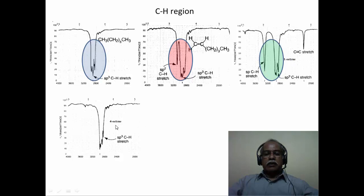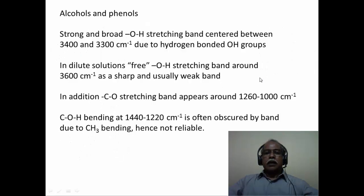If you take an internal alkyne that does not possess a terminal acetylenic CH, this particular band is missing because this is an internal acetylene. Internal acetylenes do not have acetylenic hydrogen. Therefore, that band is clearly missing in the case of 4-octyne compared to the spectrum of 1-octyne, which has the CH corresponding to the SP CH stretch. Now let us go to alcohols and phenols. OH stretching frequency is a very characteristic feature in an infrared spectrum.